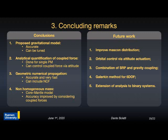Several items are left for future work: first, to improve the mascon distribution inside the asteroid; second, to perform orbital control via attitude actuation; third, to combine solar radiation pressure and gravity coupling effects for control; fourth, to add rotational dynamics to the Galerkin variational integrators; and fifth, to extend the analysis to binary systems, where the secondary asteroid is smaller and more comparable in size to the spacecraft.